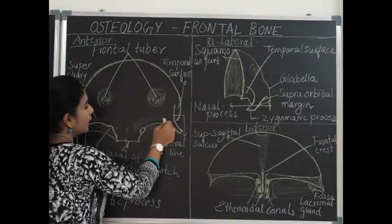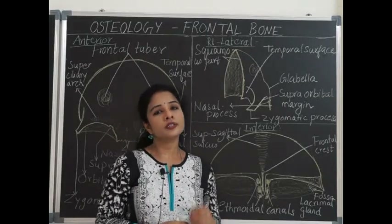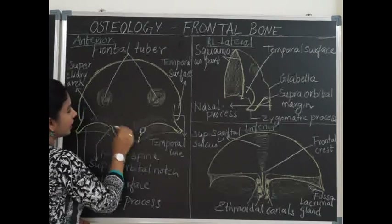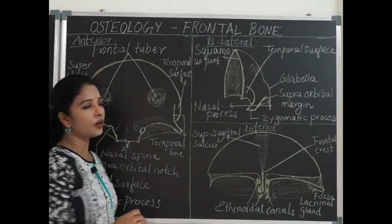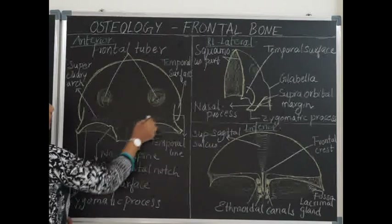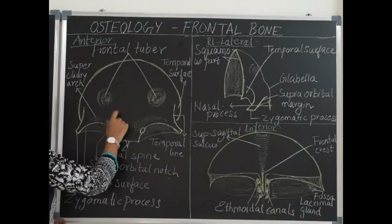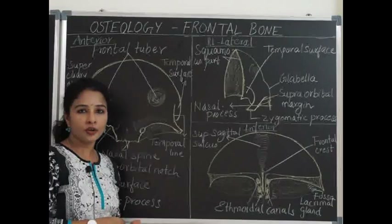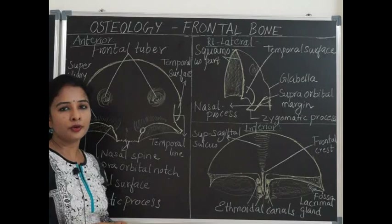Above the supraorbital margin there is a slight bony elevation related to the eyebrows called the supraciliary arches. The smooth area between the two supraciliary arches, which is more prominent and elevated, is called the glabella. The squamous part anteriorly is identified by two prominences on either side called the frontal protuberance, frontal tuberosity, or frontal tuber. Ossification of the frontal bone begins at the frontal protuberance.